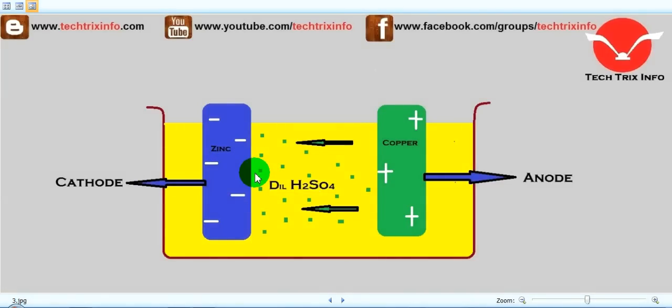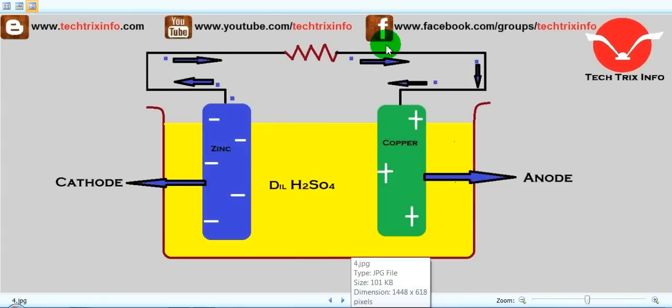The zinc becomes negatively charged and the copper becomes positively charged. How does electric current flow happen in a voltage cell? Simply, we connect an external wire. We connect both the zinc and copper with the help of an external wire.